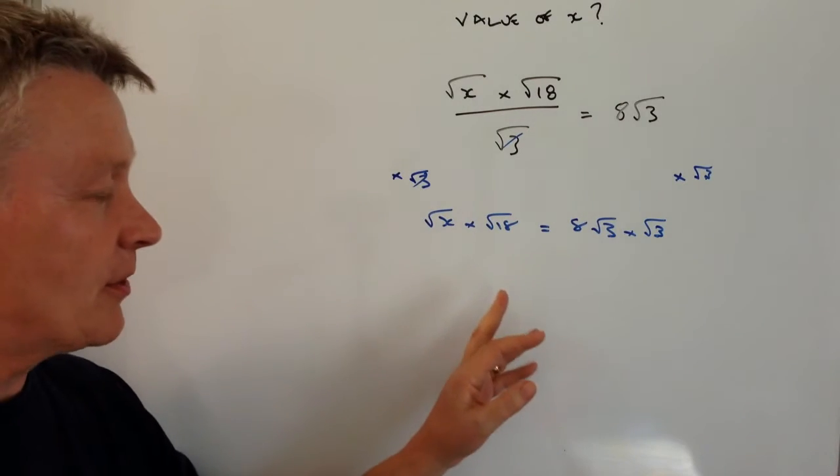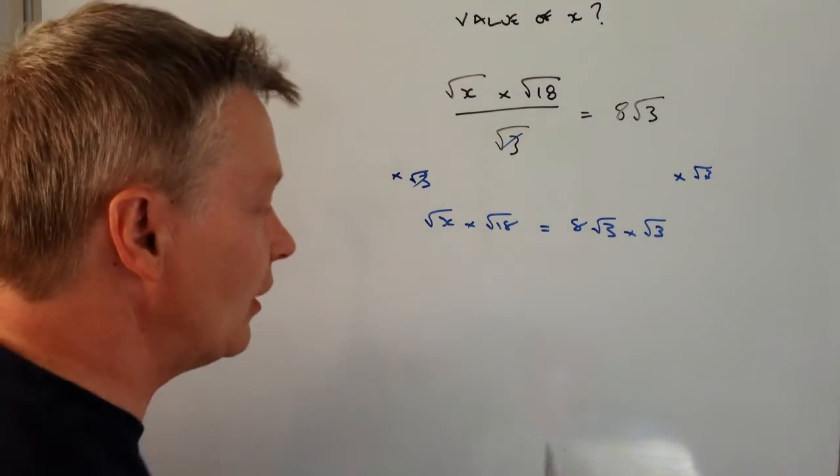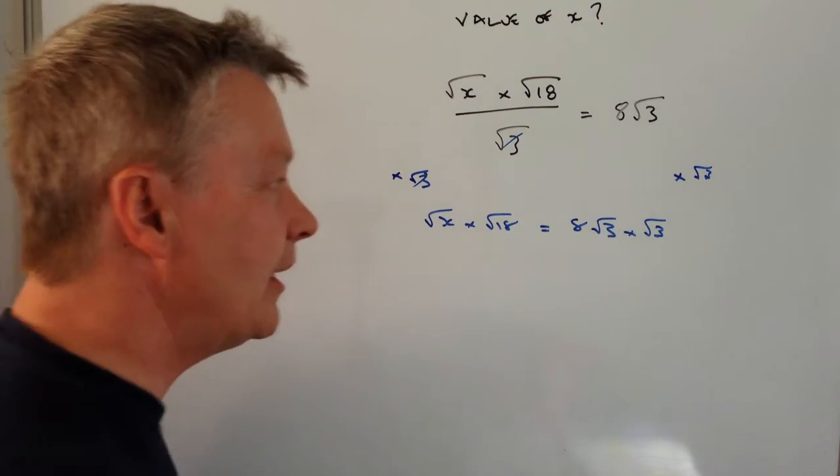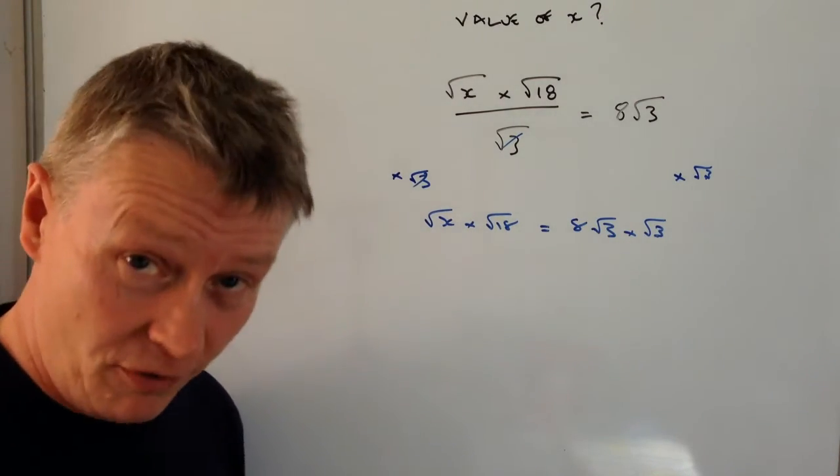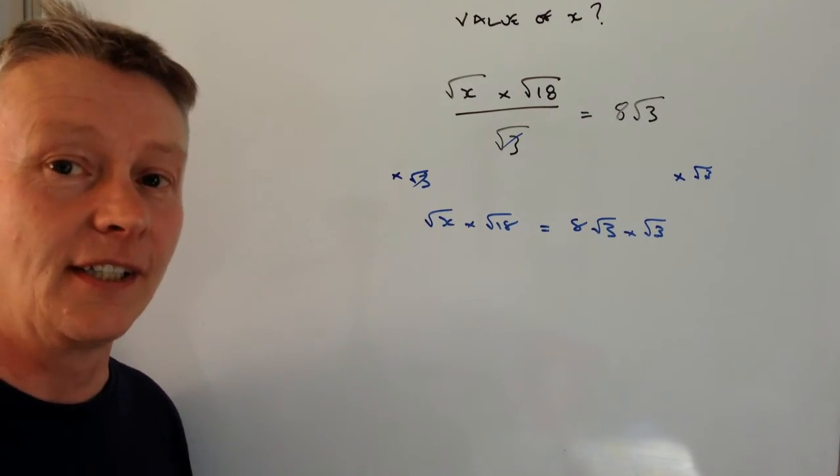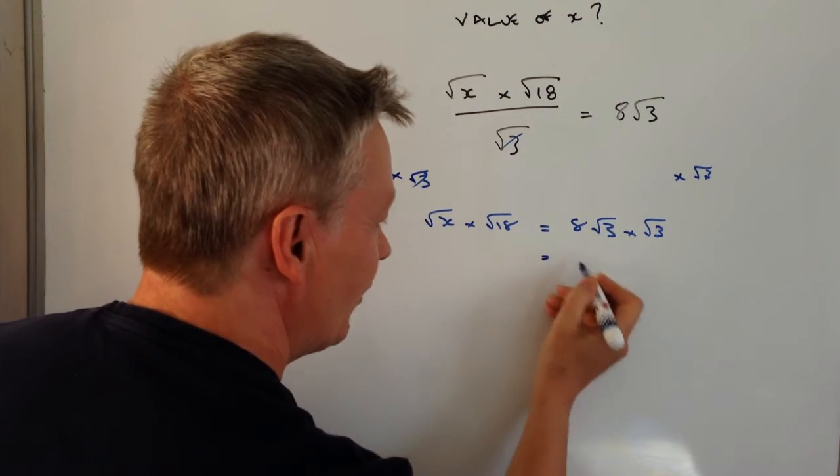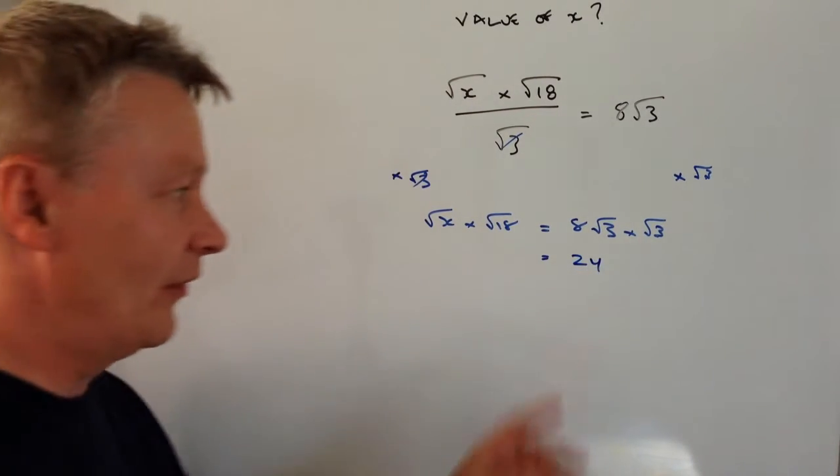Okay, so that gives me the opportunity then to solve this and get a whole number from it because root 3 times root 3 is root 9. So what I've got here is 8 times root 9. Well the root of 9 is 3. So 8 times 3 is going to give me 24 on this side.